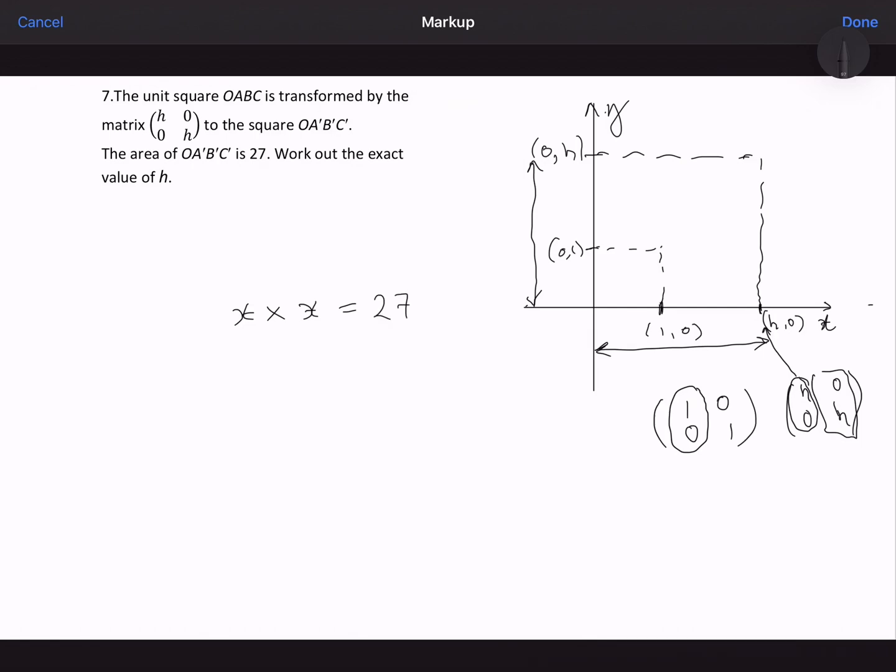I could have also called it H. So this would mean that H squared is equal to 27. So to work out the value of X, or this H that I'm looking for, I would have to square root.